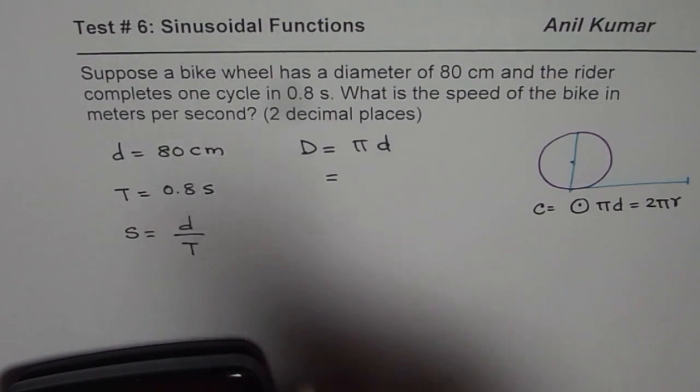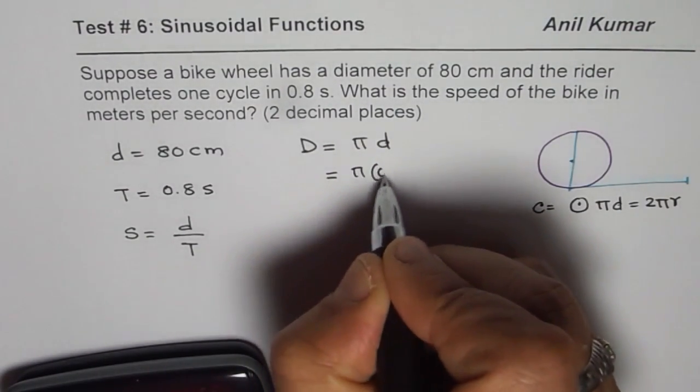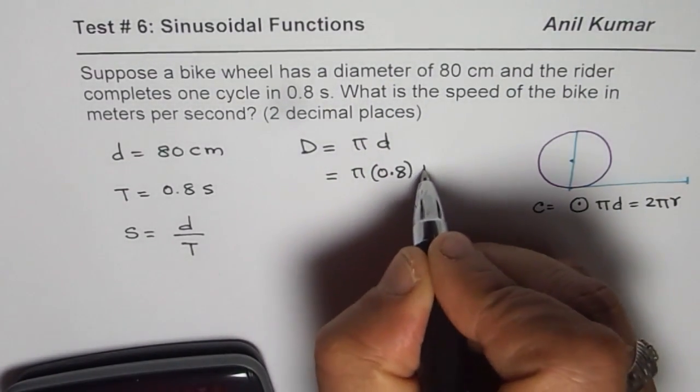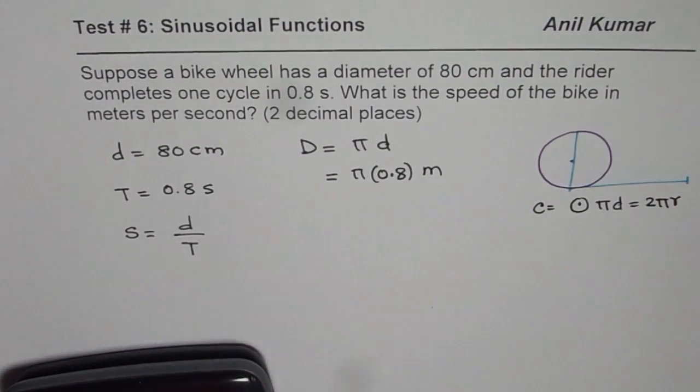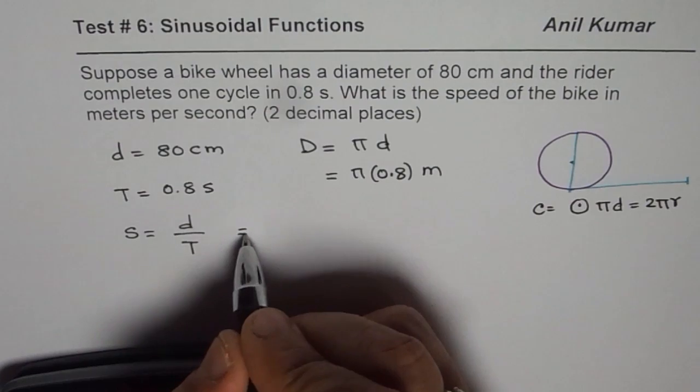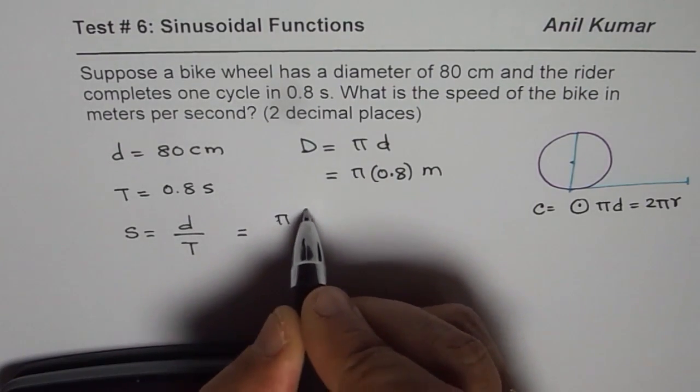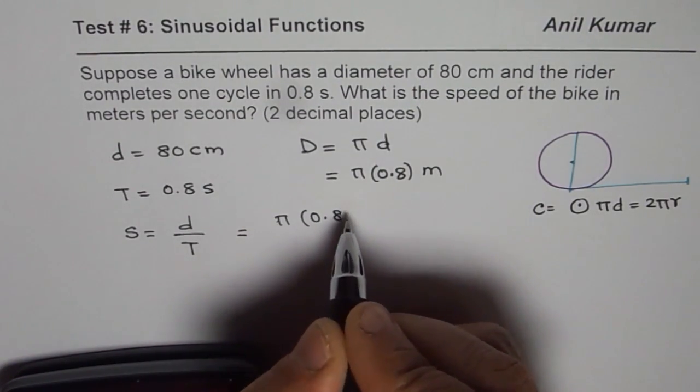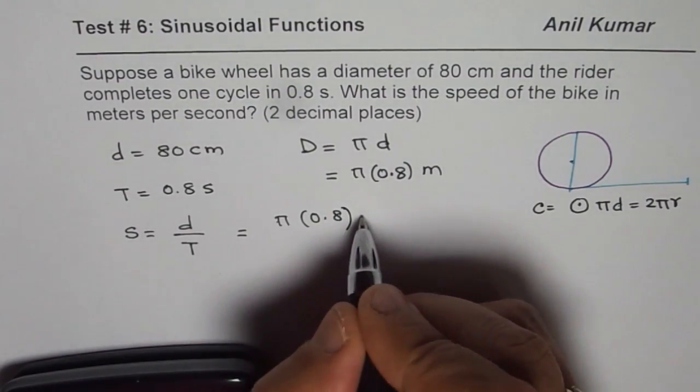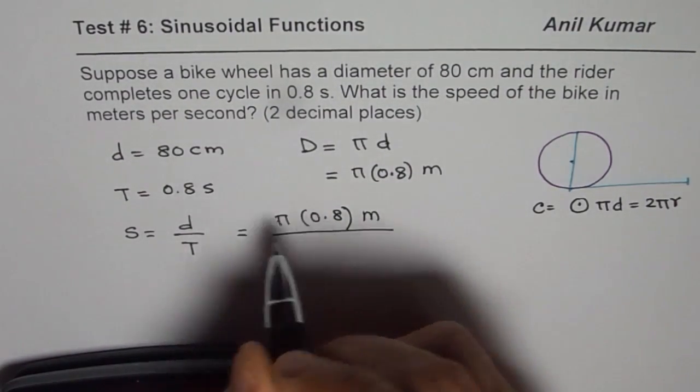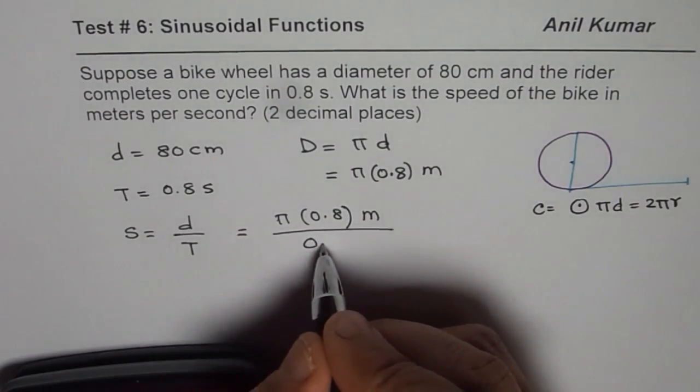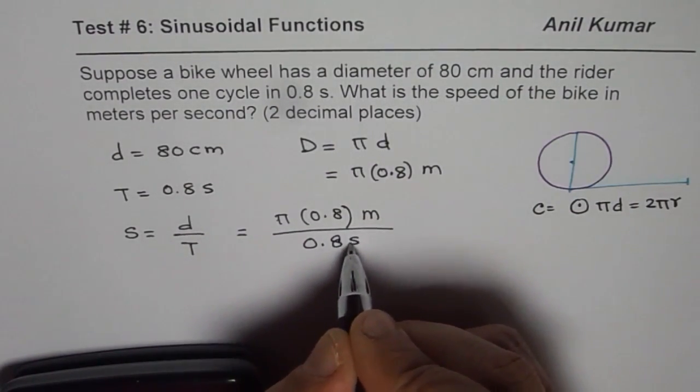80 cm is 0.8 meters. We get π × 0.8 meters as the distance. Therefore, speed can be written as π × 0.8 meters divided by time taken for one revolution, which is 0.8 seconds.